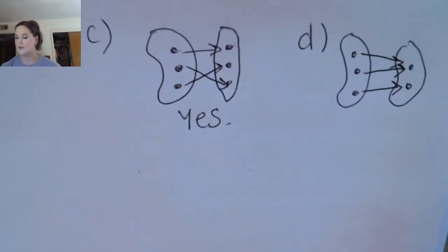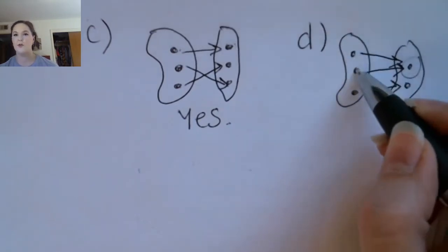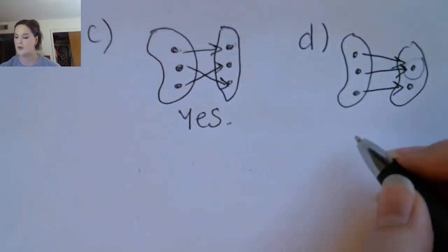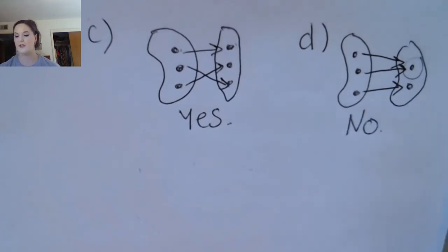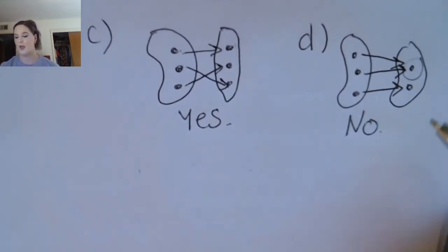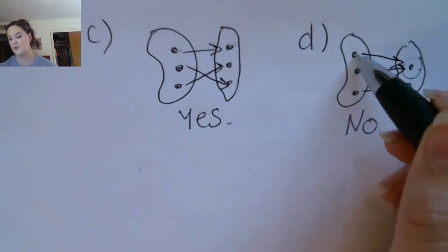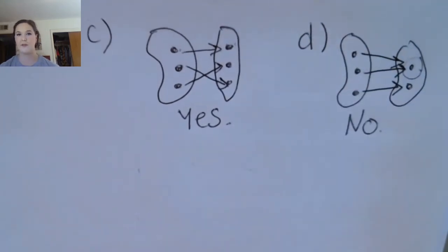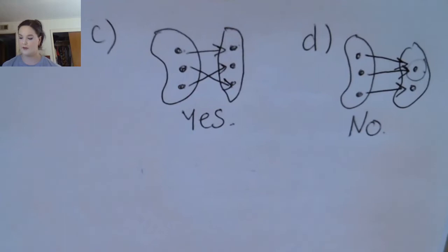Now in this next diagram you can see that for the first output, there are two corresponding input values. That's exactly what makes something not one-to-one — you can't have one output value with two corresponding input values. So this function is not one-to-one.